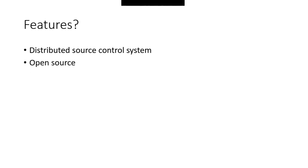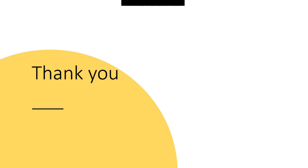Git is a distributed source control management system, which is why it's so popular. Git is an open source tool with a large and active community, so if you ever face any problems, they'll get solved very soon. I've talked a lot about Git theory — let's get into practice in our next tutorial by installing Git.